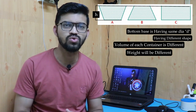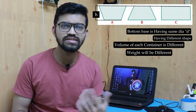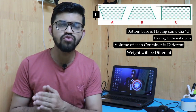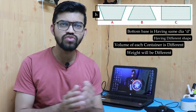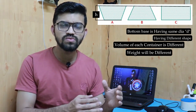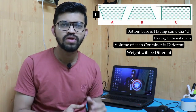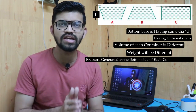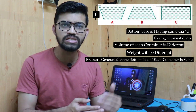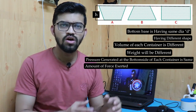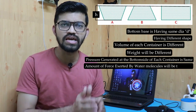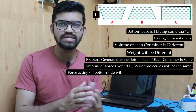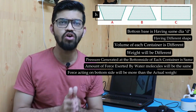Because the sizes are different, the weight of fluid in each container will be different. However, the bottom opening — the base diameter — is the same for all containers. Because the bottom diameter of each container is the same, the pressure generated at the bottom of each container will be the same. Therefore, the force exerted by the water molecules on the bottom of each container will be the same — and this force will actually be more than the actual weight of that particular fluid.